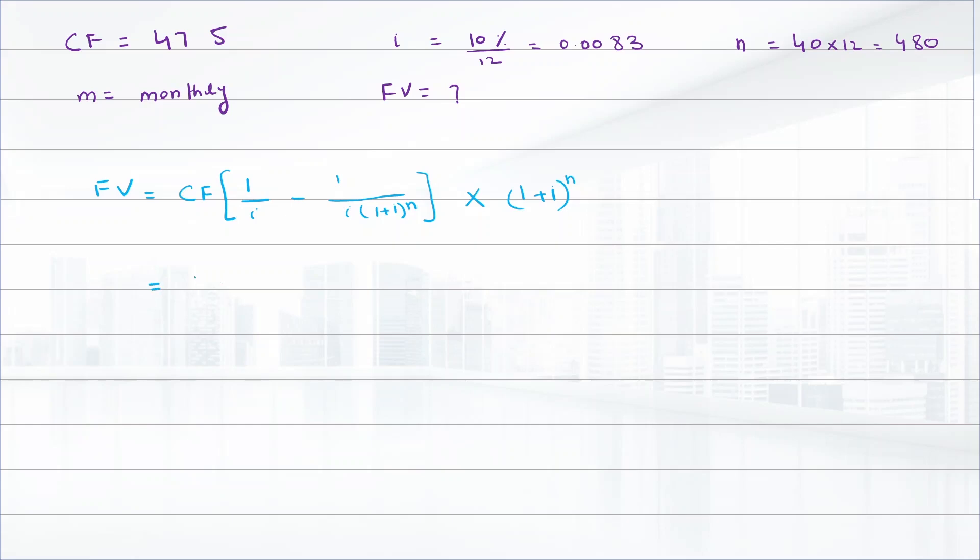CF is 475 into 1 divided by 0.0083, 1 plus 0.0083 minus 1 divided by 0.0083, into 1 plus 0.0083 raised to power 480.